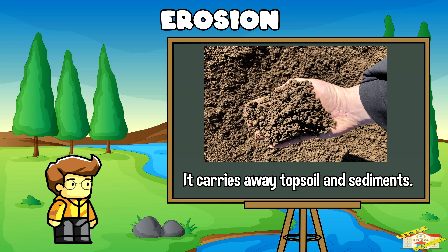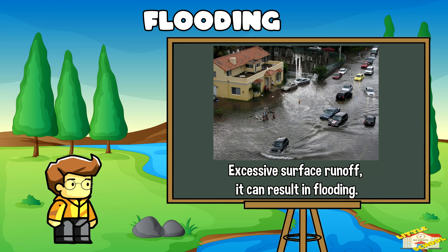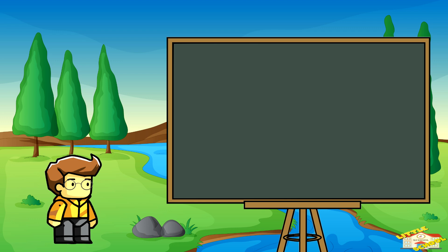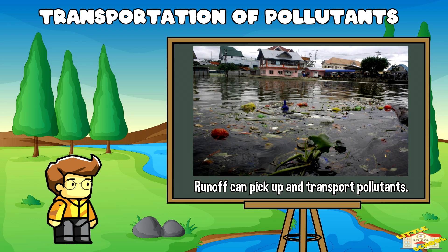When surface runoff is excessive, it can result in flooding in low-lying areas. Flooding can cause property damage and pose a threat to human safety. Runoff can also pick up and transport pollutants such as fertilizers, pesticides, oil, and litter from roads and urban areas.